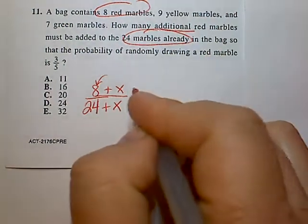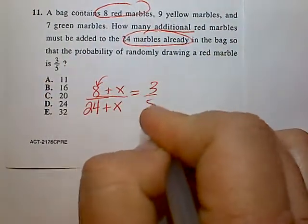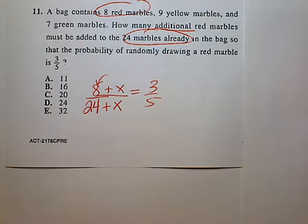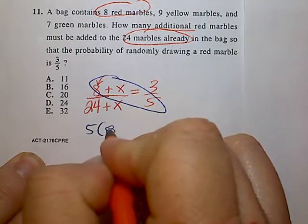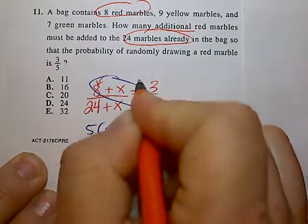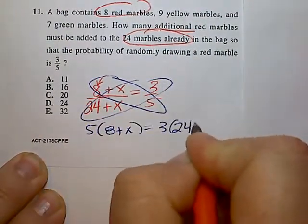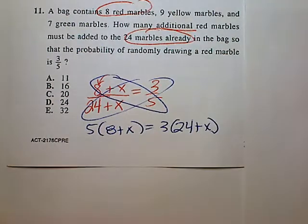Now we want to know is this equivalent to 3 fifths, which is 60%. There's a couple ways you could go about doing this. Some students will feel most comfortable doing cross multiplication, but the goal is to answer this question in the quickest amount of time, and I believe that some of you can achieve that using a calculator.